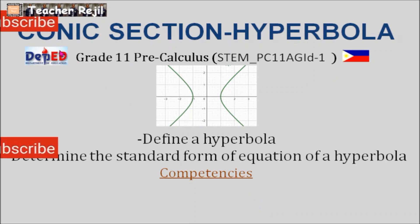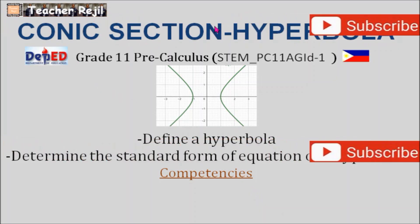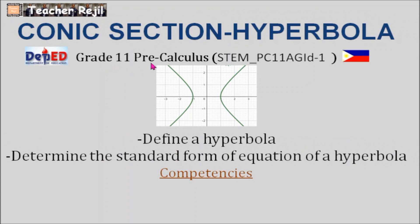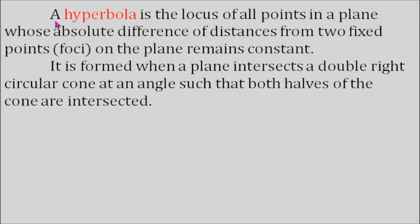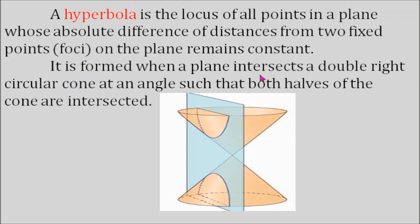This video is about conic section hyperbola. It's a grade 11 pre-calculus lesson. A hyperbola is the locus of all points in a plane whose absolute difference of distances from two fixed points, called the foci, on the plane remains constant. It is formed when a plane intersects a double right circular cone at an angle such that both halves of the cone are intersected.